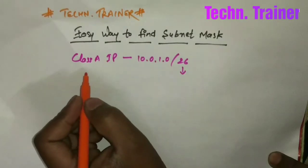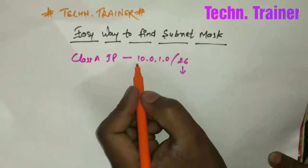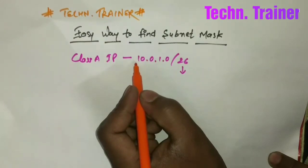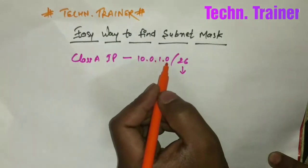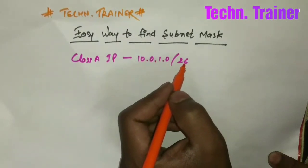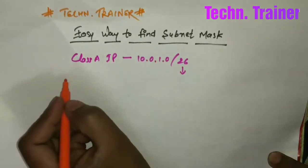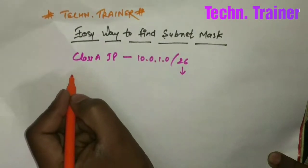For a Class A IP, only the first two octets have all bits on and the remaining octets have all bits off. But we have to turn on 26 bits total. Each octet contains 8 bits, so we have to turn on 26 bits.